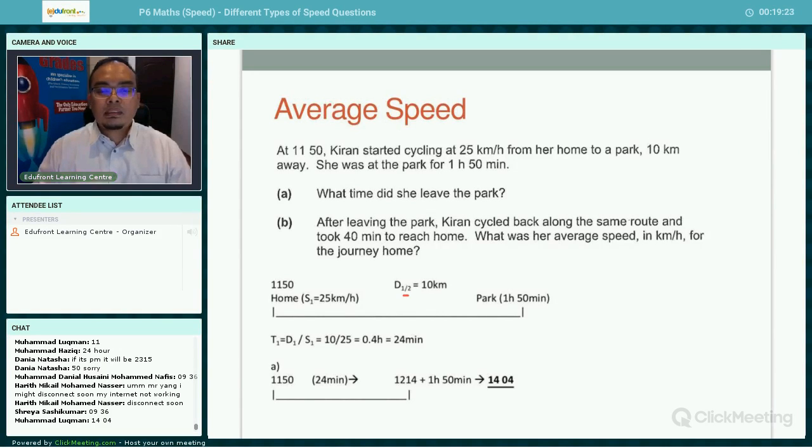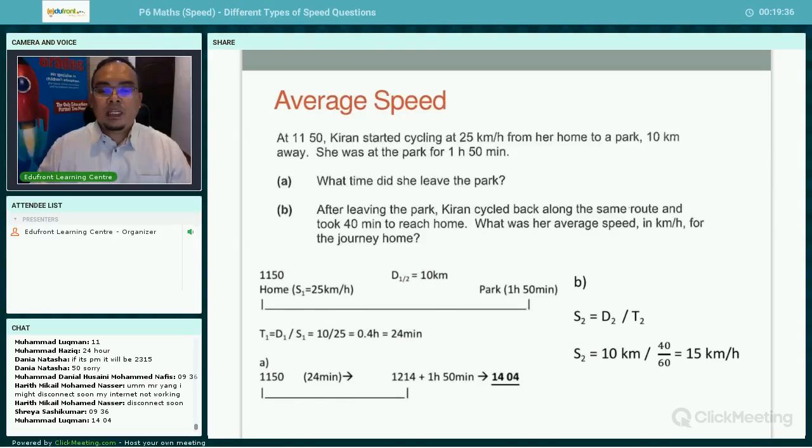Now let's take a look at part B. After leaving the park, Kiran cycled back along the same route and took 40 minutes to reach home. What was the average speed for the journey home? For the second part of the journey, the distance is the same 10 kilometers and the time taken is 40 minutes. Simply, to find speed, distance divided by time. 10 kilometers divided by 40 minutes.